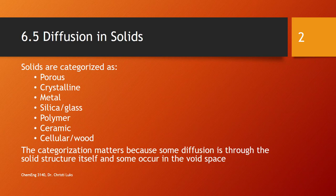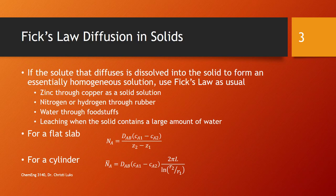Really based on the void space and the solid structure itself, so they can be porous, crystalline, metals, glasses, polymers, ceramics, cellular, or wood fibers. All of those are going to have different ways that the substance can diffuse through the solid and therefore need to be characterized and described in different ways. We are looking at cases where I can use Fick's law.